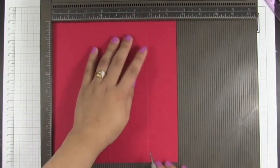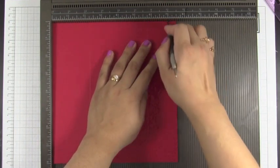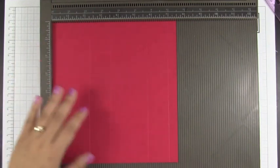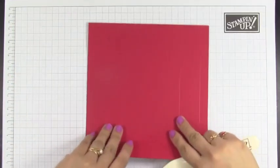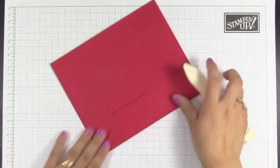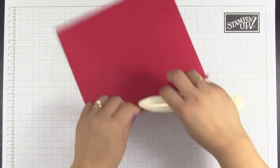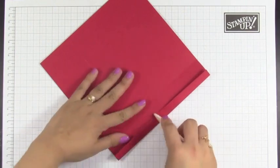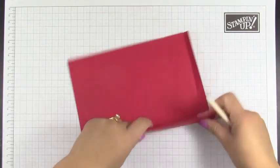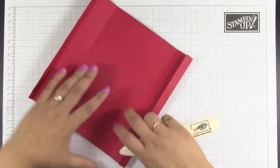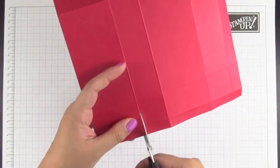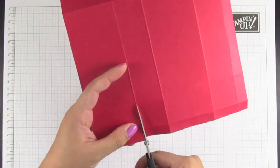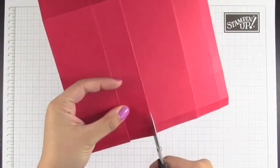And now I'm going to use my bone folder to fold the crease. We're going to cut up all the way to the second score line and we're going to do that same thing on the other side.